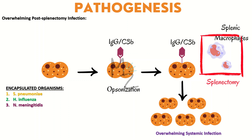Other encapsulated organisms that make people susceptible to Neisseria meningitidis infections include Streptococcus pneumoniae, Haemophilus influenzae, and of course Neisseria meningitidis itself. The type of pathogenesis is pyogenic.